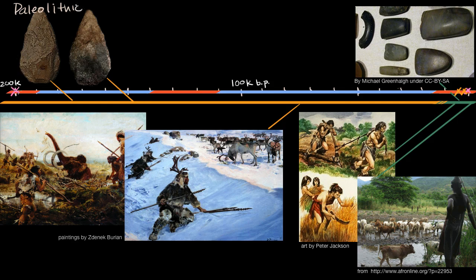The Old Stone Age is the great bulk of human history. There's also a Mesolithic that comes about 15,000–20,000 years ago, but then around 10,000 years ago, stones have a much more polished appearance — things like this. That period, starting around 10,000–15,000 years ago depending on what part of the world you look at, is referred to as the Neolithic period, referring to 'new stone.'